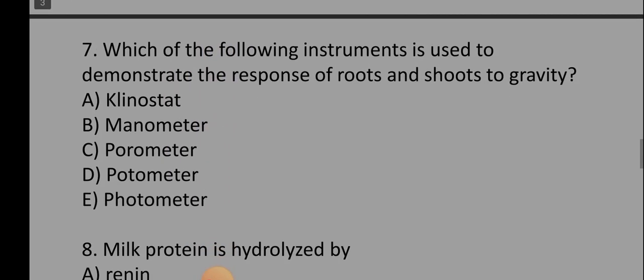Let's go to the next question, which is question seven. Question seven is, which of the following instruments is used to demonstrate the response of root and shoot to gravity? A) Klinostat, B) Manometer, C) Porometer, D) Potometer, E) Photometer. So the correct option is klinostat. That's the correct option, so option A is the correct option.